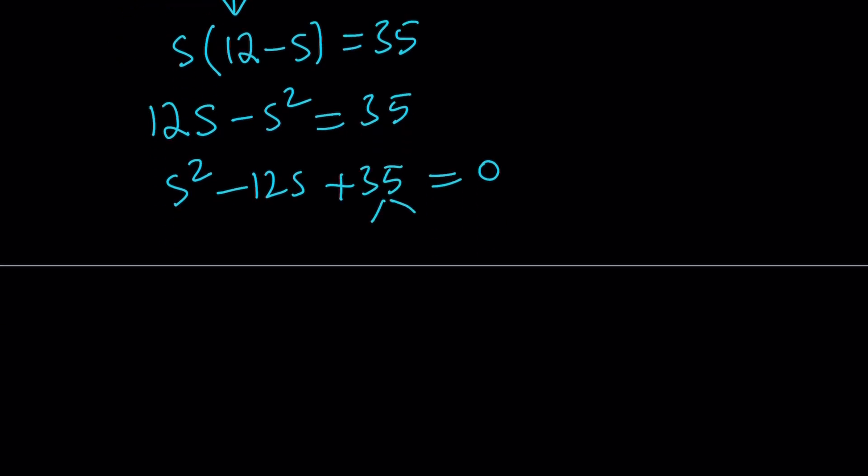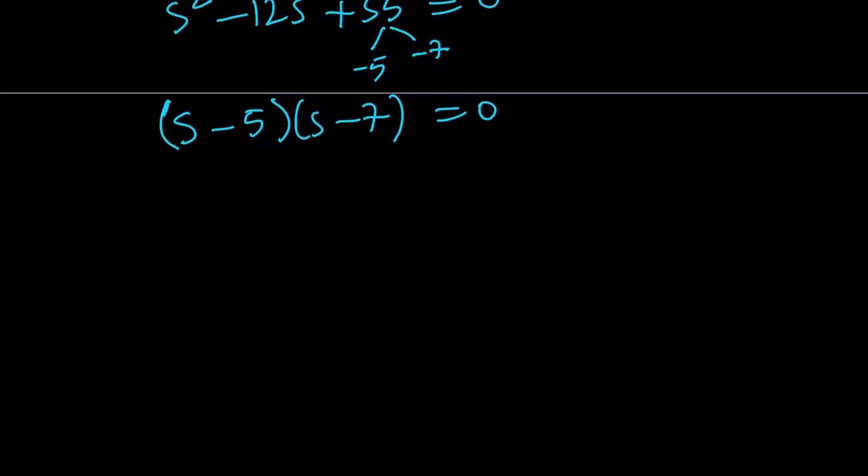Now we're looking for two numbers whose product is 35. And their sum also need to be negative 12. And those numbers are negative 5 and negative 7. Now we can write this as (s-5)(s-7) = 0, which means s is either 5 or 7.